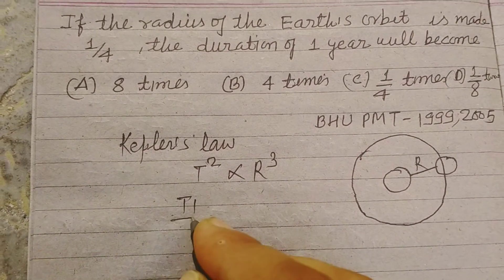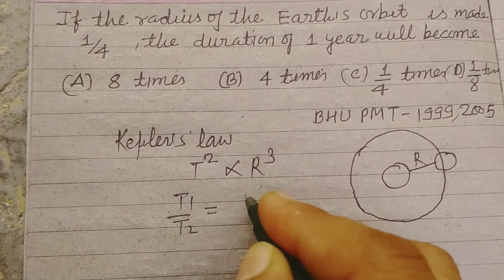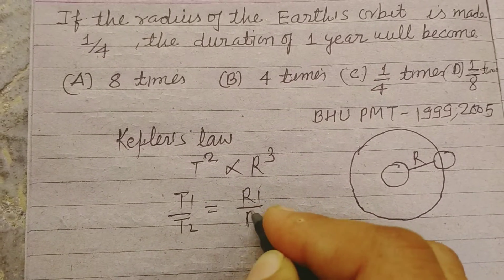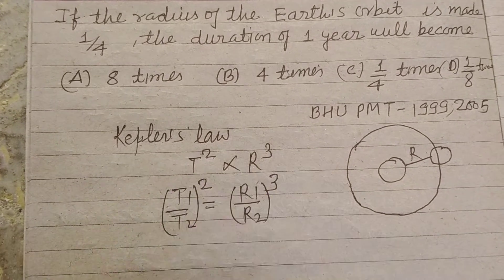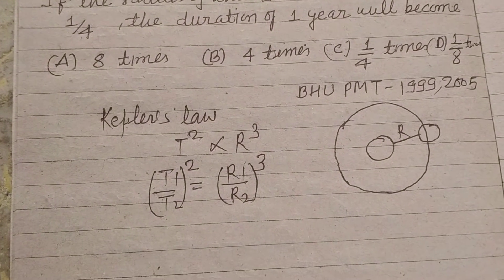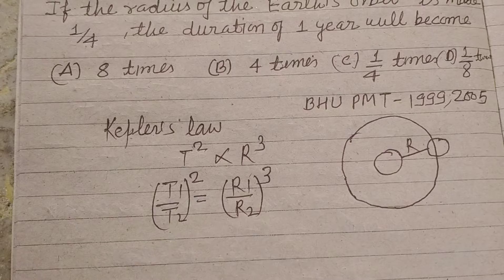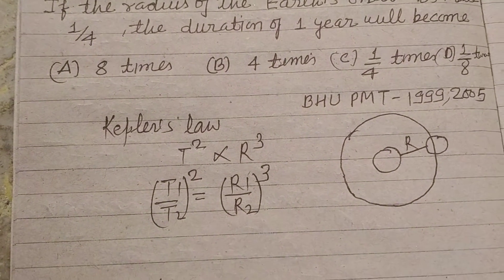So T1 upon T2 whole square equal to R1 upon R2 whole cube. Whole square of T1 upon T2 equal to whole cube of R1 upon R2.